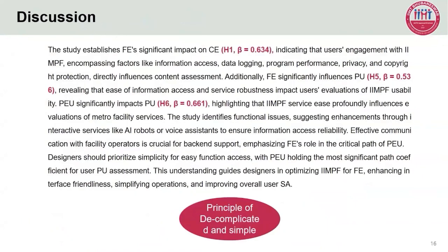Based on the above data analyses and results, we consider the implications. The study establishes BAY's significant impact on CE (H1, beta = 0.634), indicating that users' engagement with IIMPF — encompassing factors like information access, data logging, program performance, privacy, and copyright protection — directly influences content assessment.